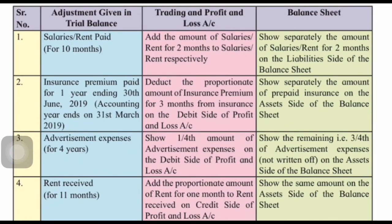There are certain adjustments known as hidden adjustments. These are not part of the stated adjustments but are mentioned in the trial balance. For example, salaries or rent paid — given in brackets for 12 months. In a year there are 12 months, but salary is paid only for 10 months and should be paid for 12 months. So 2 months salary is outstanding. Calculate the amount: divide by 10, multiply by 2 — that is the outstanding salaries amount. Add that amount of salary to profit and loss account debit side, and show outstanding salary on the balance sheet liability side.